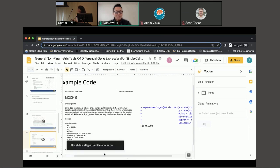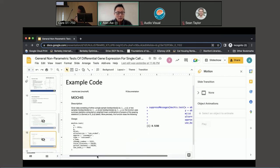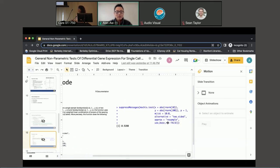Just to show you an example of how we can run the main function—we have it documented already. We call it the Mochi's test with a bunch of parameters you can specify. Here's an example of how you would run it on some simulated two samples.